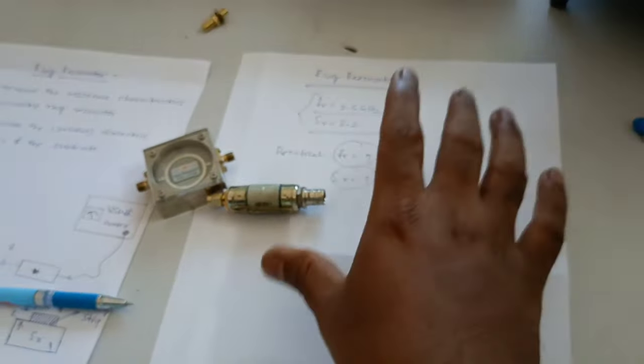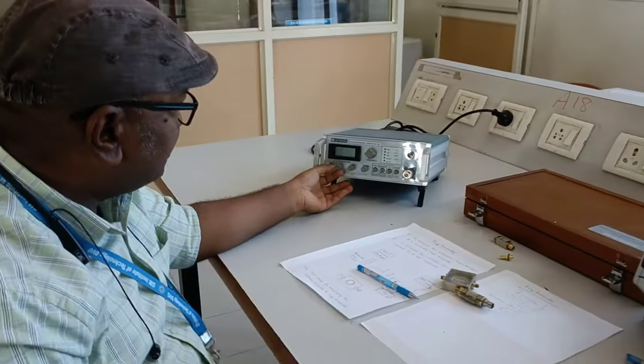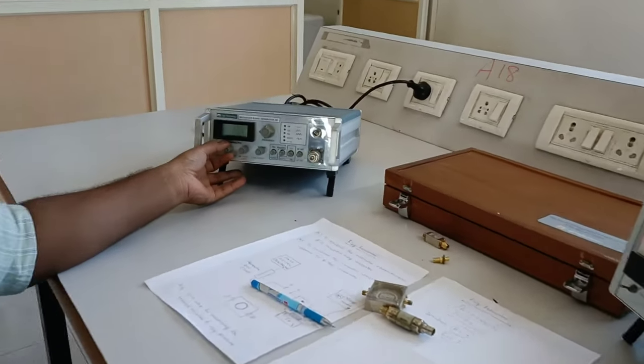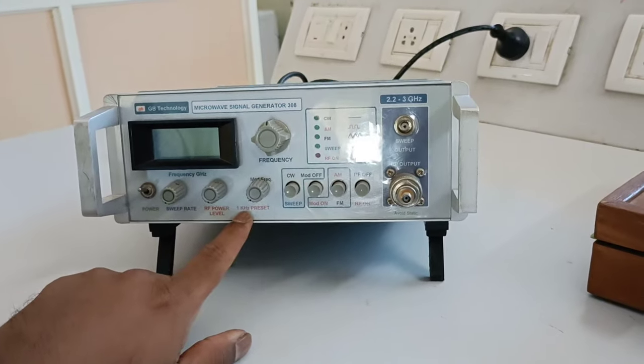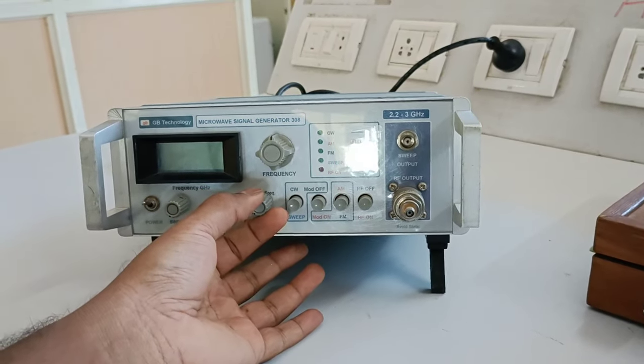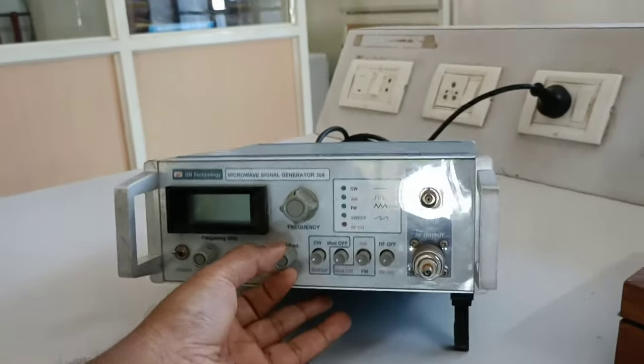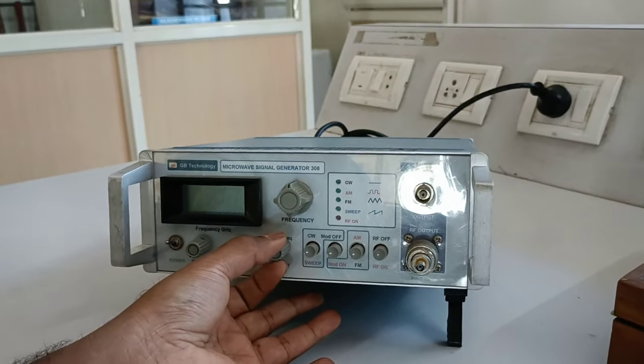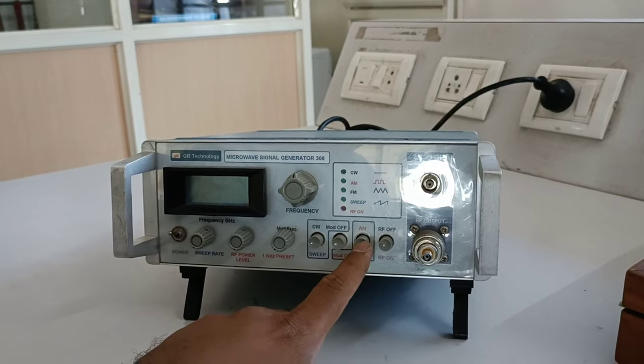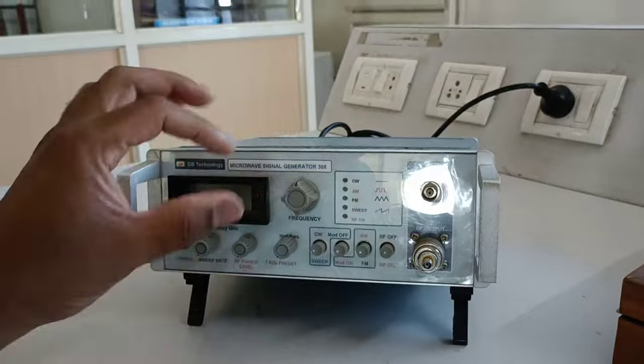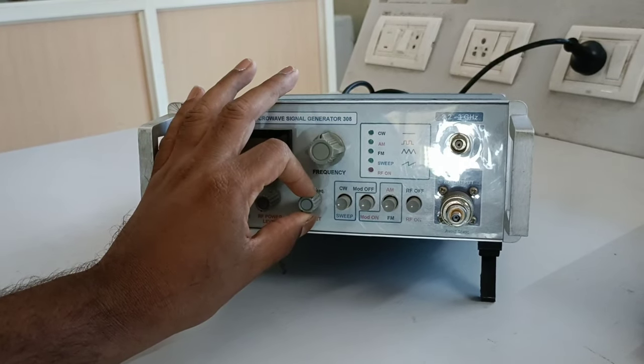And before switching on the setup, you have to make some initial settings. Signal generator. Here you have to maintain these initial settings. Sweep rate, you should keep minimum. Anti-clockwise, fully minimum. RF power level, minimum. And this modulation frequency, 1 kilohertz preset, it is given. It should be at extreme left at clicks on. Suppose sometimes if it is open, you have to take it back to fully anti-clockwise and extreme left and you can hear the clicks on. And all these push buttons, you have to keep it in release condition. CW, modulation, AM, etc. All these push buttons, release condition.